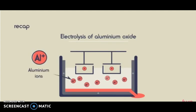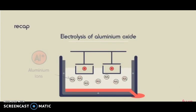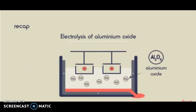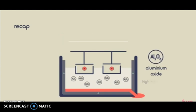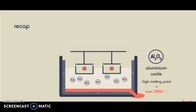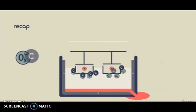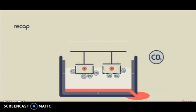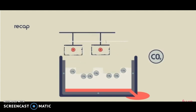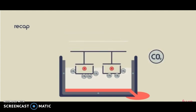To summarise: to extract aluminium, electrolysis is used. Aluminium oxide needs to be molten for the ions to move through it, so it is dissolved in cryolite to lower the melting point. The anode is gradually worn away because the oxygen from the solution reacts with the carbon graphite anode, producing carbon dioxide, so the anode wears away and needs to be replaced regularly.